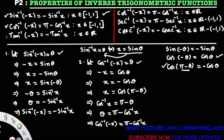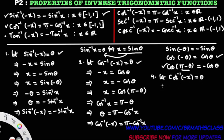Similarly, you prove tan inverse of minus x equals to minus tan inverse x. Now I will prove the fourth result: cot inverse of minus x equals to pi minus cot inverse x. Let cot inverse of minus x equal to theta. From the definition of inverse cotangent function, we can write minus x equal to cot theta.